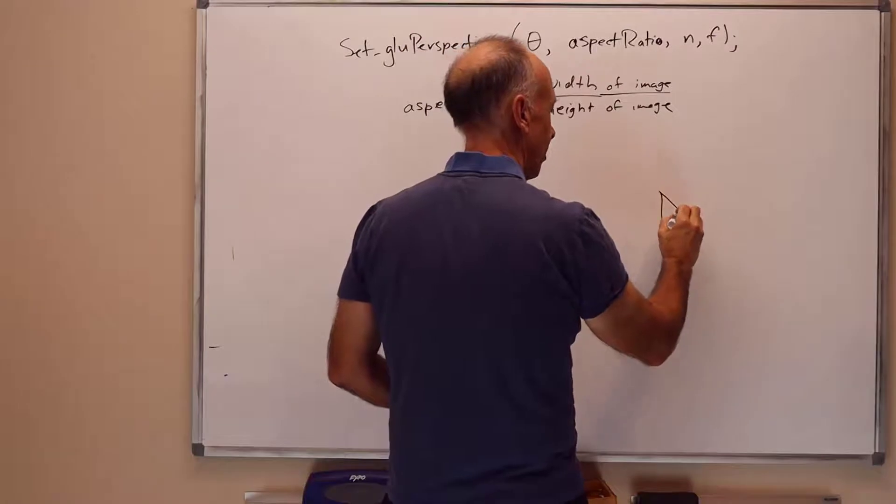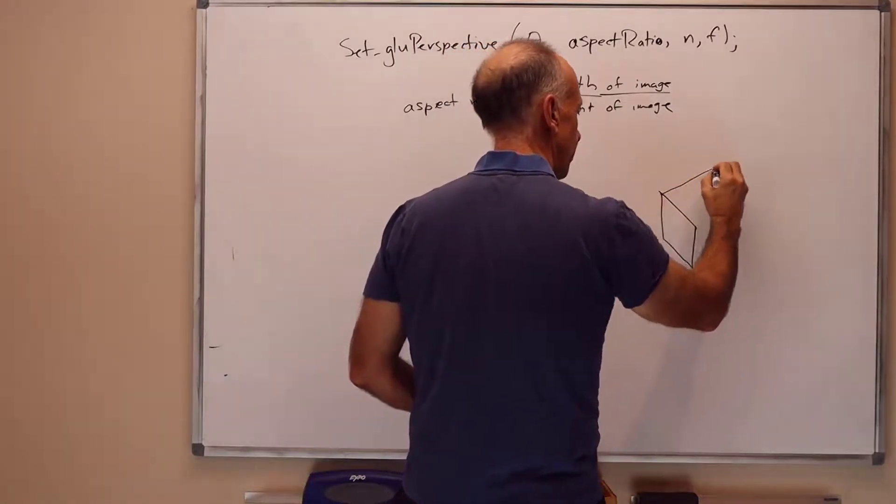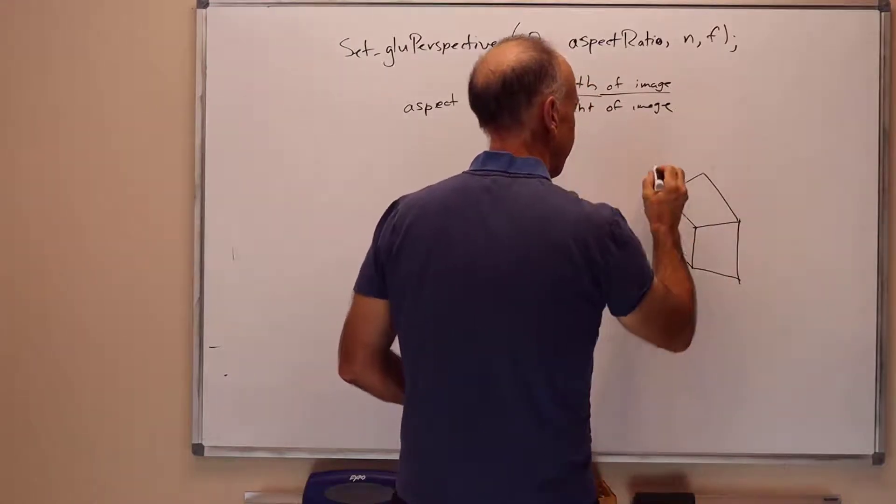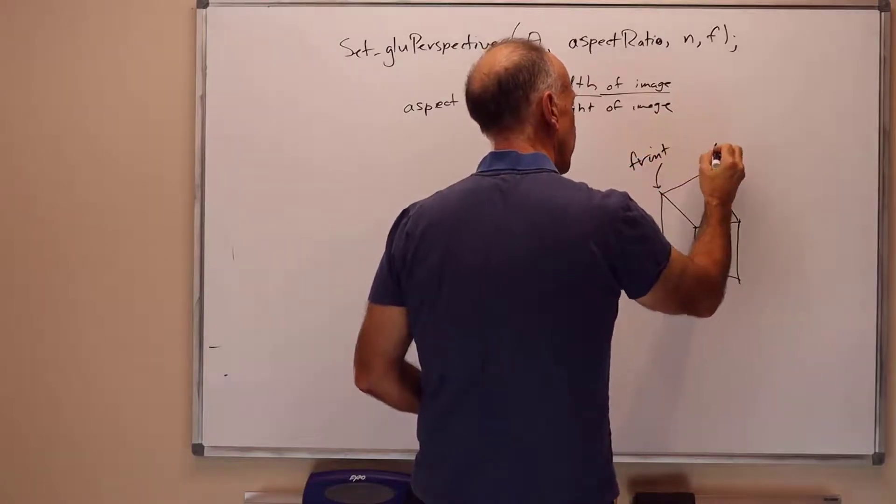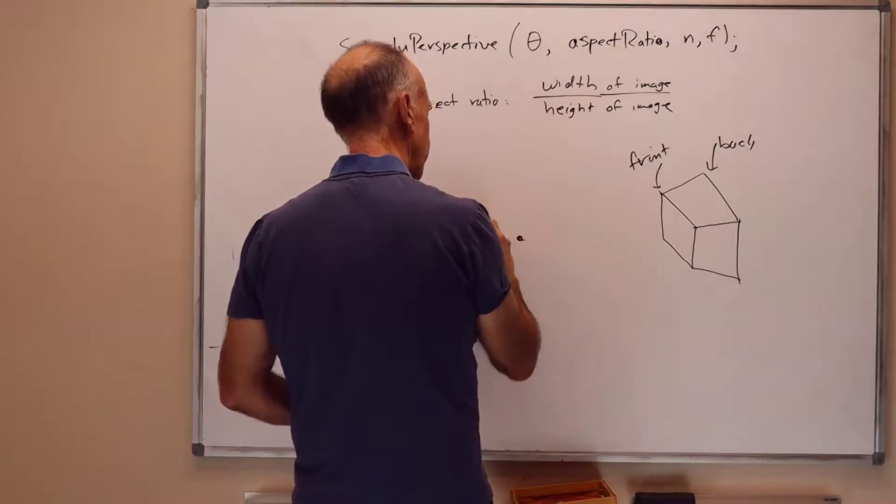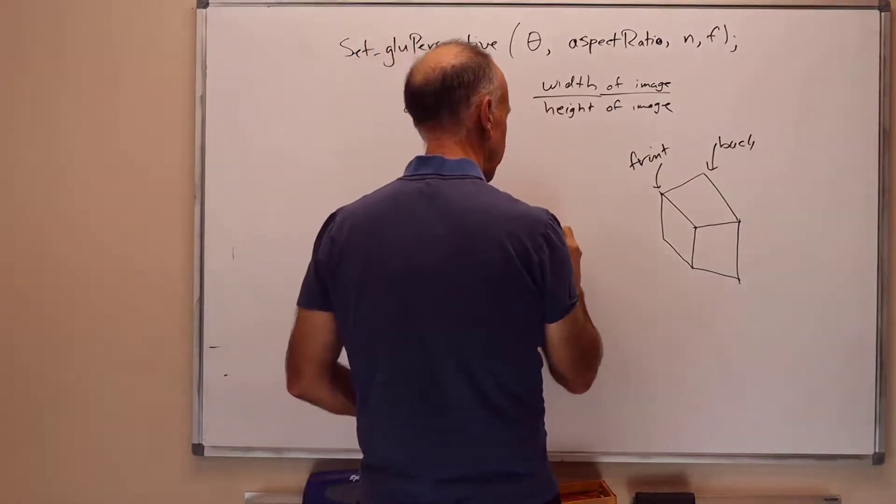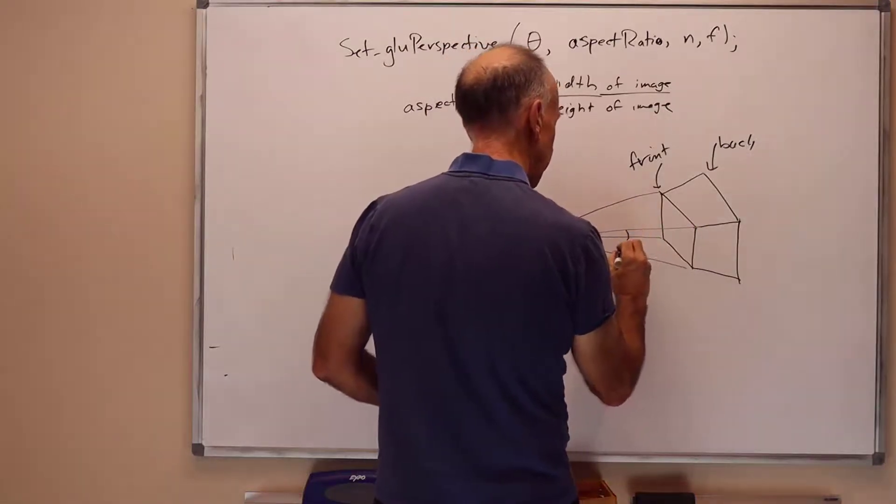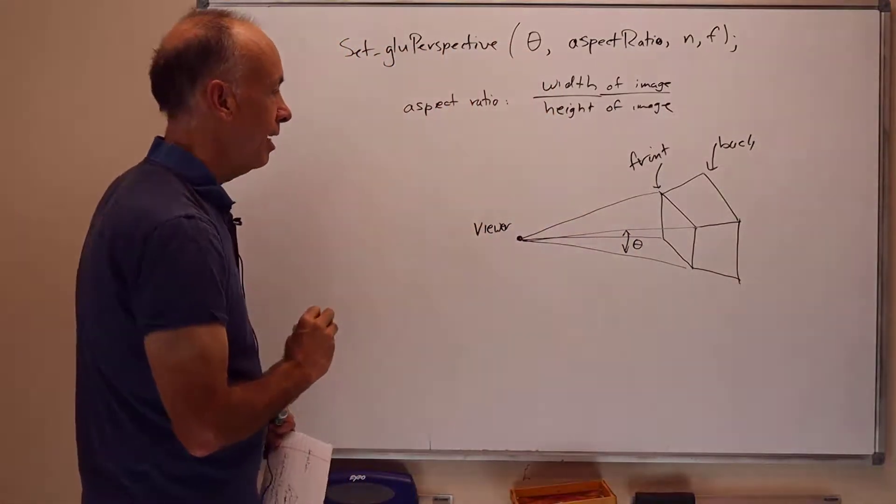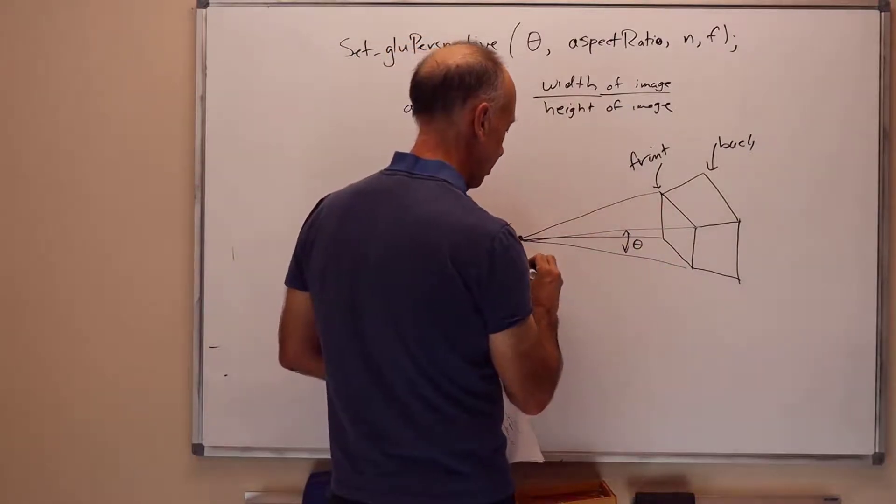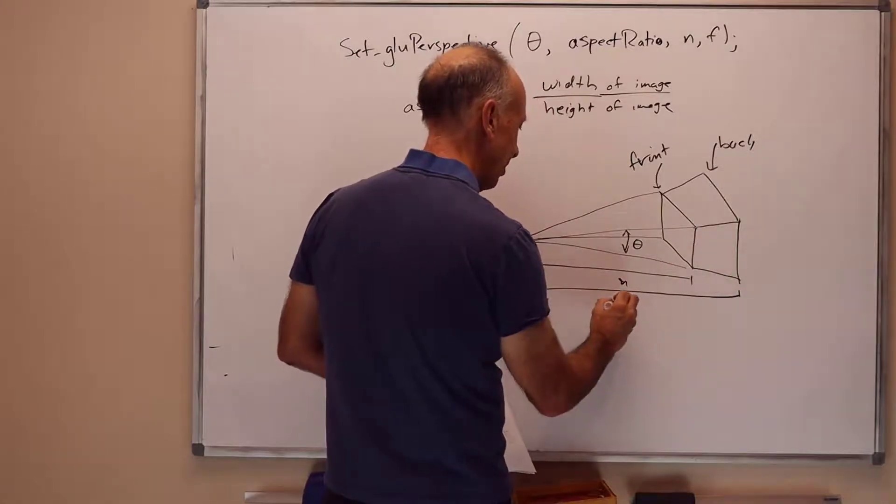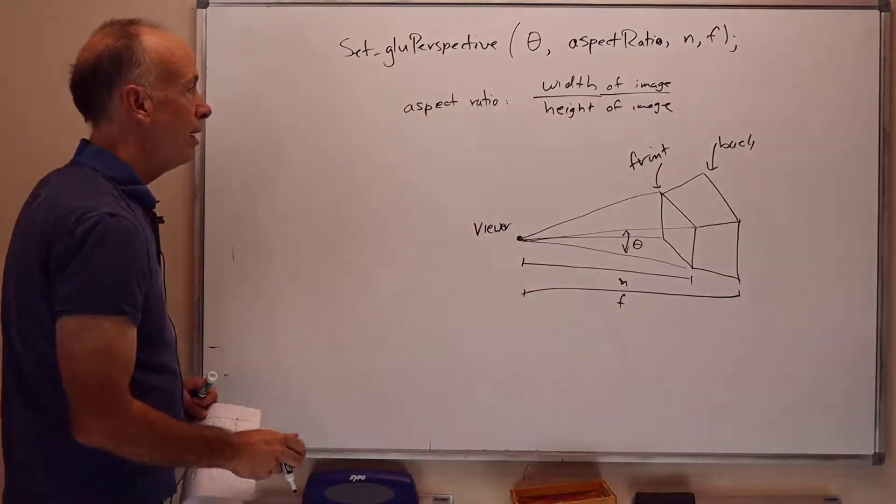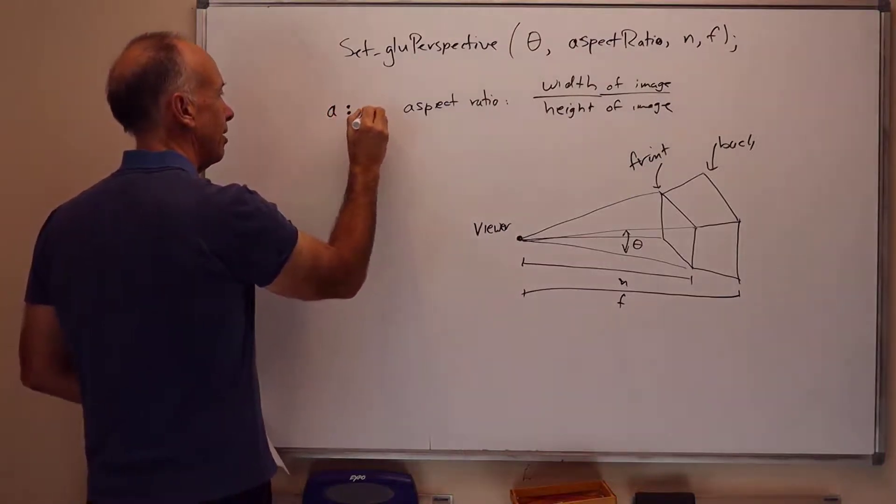Let me draw a side view here. Here's the frustum. The front of the frustum is here. The viewer is sitting here and looking out this way. The angles up and down, the up and down angle is theta. And the aspect ratio is the ratio of the width to the height. n is this distance out to here. F is the distance out to here. Theta is the up-down angle. Aspect ratio is the width divided by the height of the front or the back. They're the same.